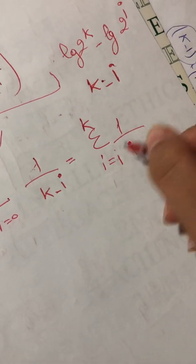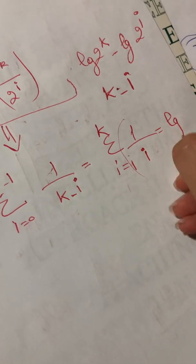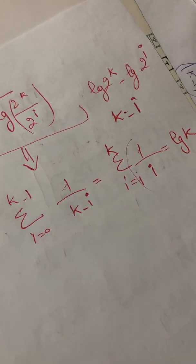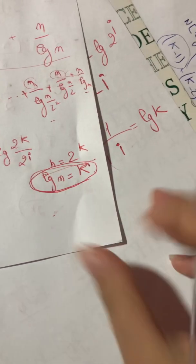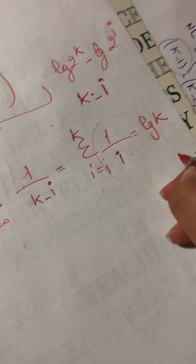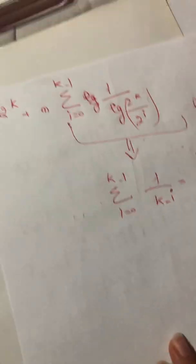I know this form, I know this form—that's log k. And as I said before, k equals log n. So it's equal to log log n.